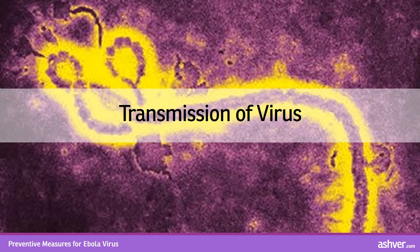Transmission of virus: Ebola is primarily a zoonotic disease, with animals being the natural reservoirs of the virus. Handling of infected chimpanzees, gorillas, fruit bats, monkeys, forest antelopes, and porcupines found ill or dead in the rainforests can spread the infection to humans. Ebola spreads in the community through human-to-human transmission, with infection resulting from direct contact through broken skin or mucous membranes with the blood, body secretions, organs, or other bodily fluids of infected people, and indirect contact with environments contaminated with such fluids.